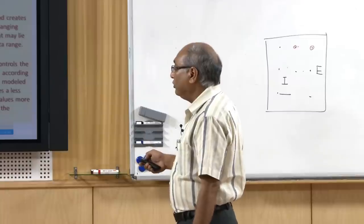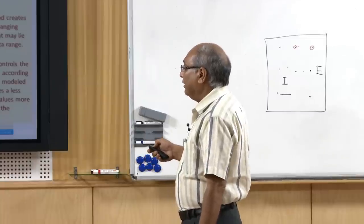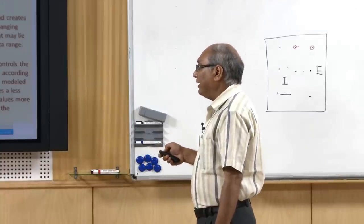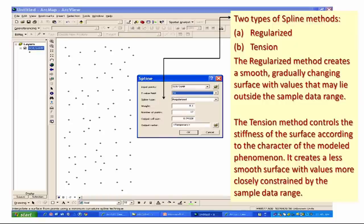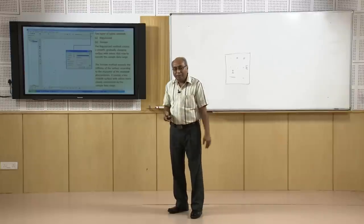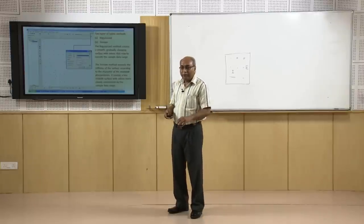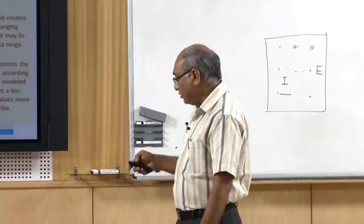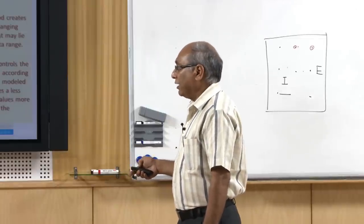When using the tension variant instead of regularized, tension controls the stiffness of the surface according to the character of the modeled phenomenon. It creates a less smooth surface compared to regularized, with values more closely constrained by the sample data range. You will have near-real values but not as smooth a surface.